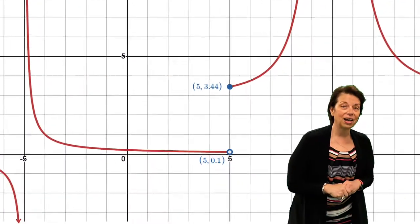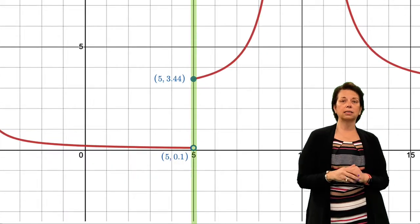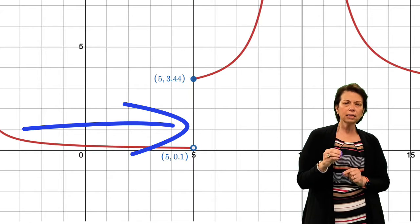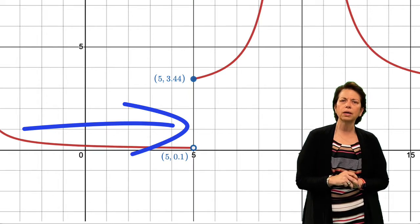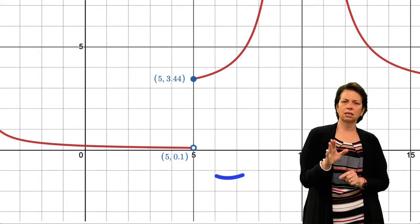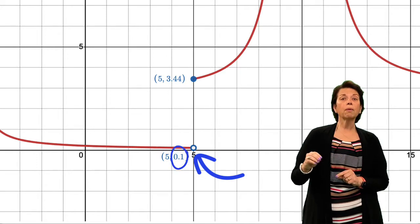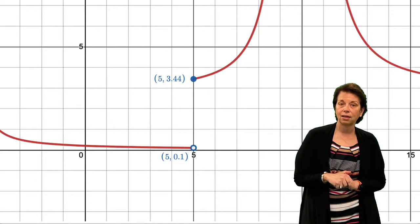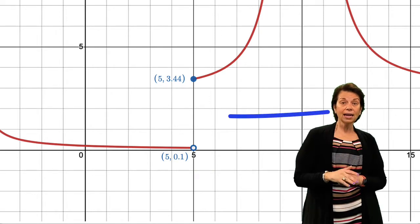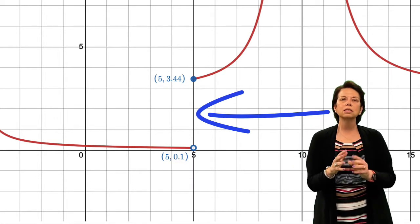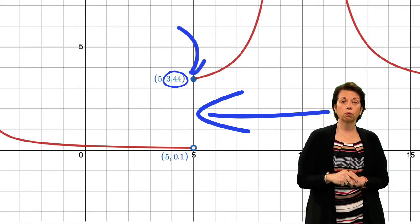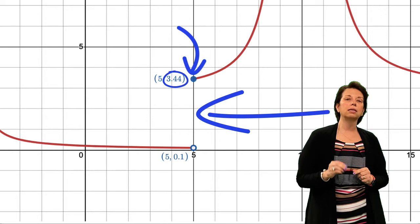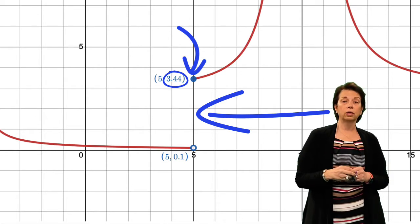Now we jump to when x is positive 5. As x approaches positive 5 from the left-hand side, we see function values trending towards zero — and in fact there is a hole at 0.1, so from the trends of the graph it is getting closer to zero as x approaches positive 5 from the left. If I look at x approaching 5 from the right-hand side, the value is trending towards 3.44, and I have a closed circle right at 5 at that output value of 3.44. So the limit as x approaches 5 from the right-hand side is trending towards 3.44.